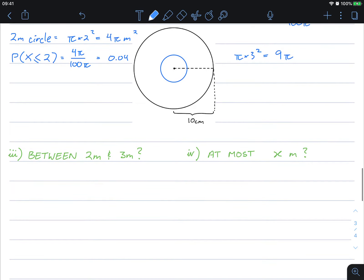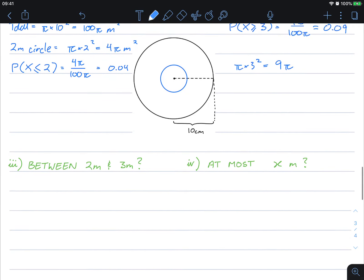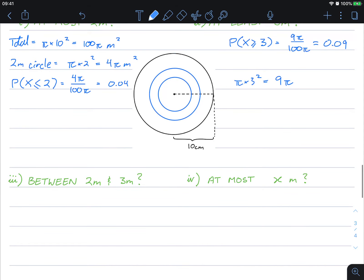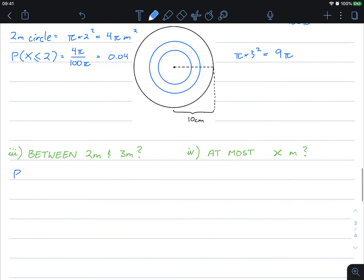What's the probability that it appears between two meters and three meters? Well, we need to find out the area that that covers. Here's my three meter circle and here's my two meter circle. We're actually looking for this area in between. Well, that's just the area of the bigger circle subtracted by the smaller circle.